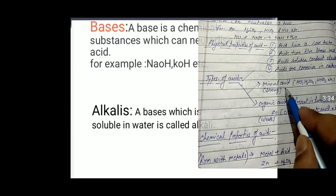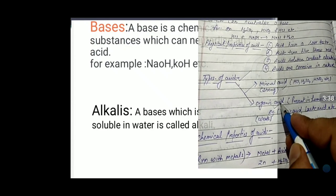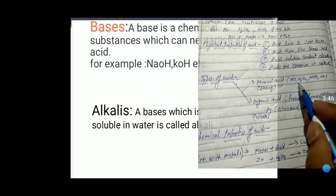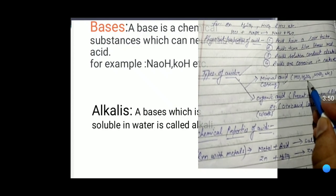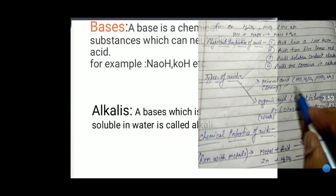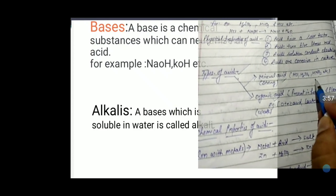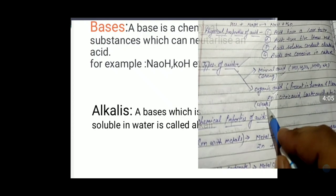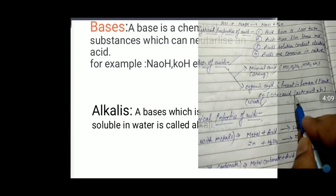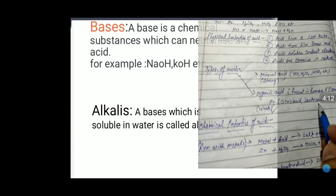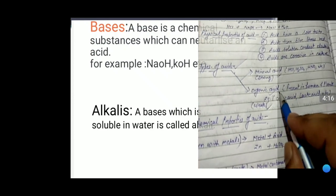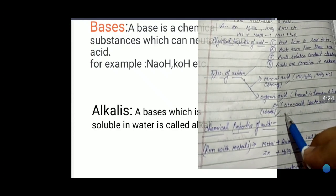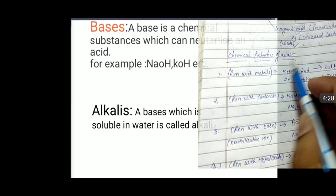There are two types of acids: mineral acids and organic acids. Mineral acids are strong acids, also called laboratory acids. For example, HCl (hydrochloric acid), H₂SO₄ (sulfuric acid), and HNO₃ (nitric acid). Organic acids are generally weak acids found in humans and plant materials, for example citric acid and lactic acid. Mineral acids are strong acids and organic acids are weak acids.